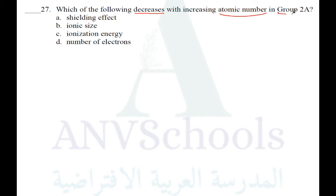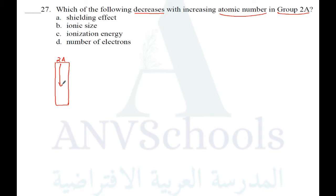But now the question is specifically about Group 2A. If you have Group 2 elements, in Group 2A elements, as you go down the group, which one is decreasing?